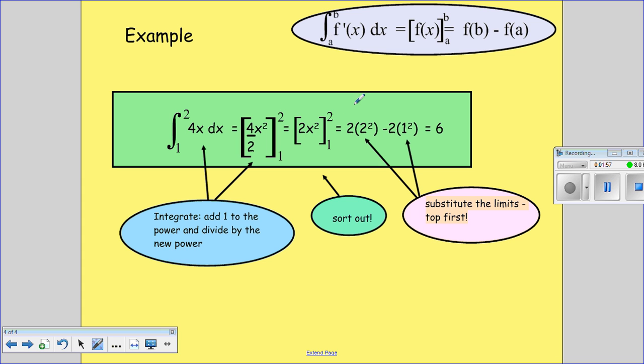Sort it out a little bit. So first of all I substitute in 2, this gives me 2 times 2 squared, that's 8. Then I take away after I've substituted in 1, so this is 2 times 1 squared which is just 2, so I get 6.